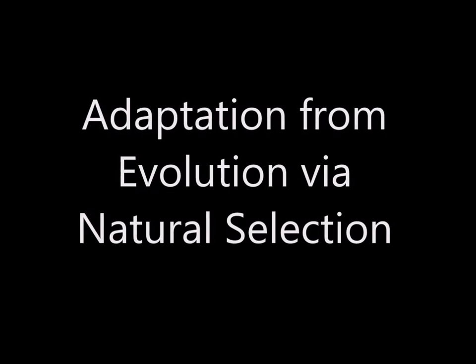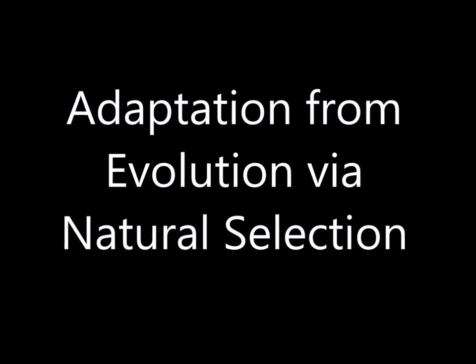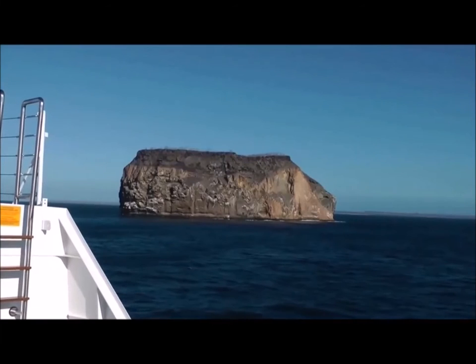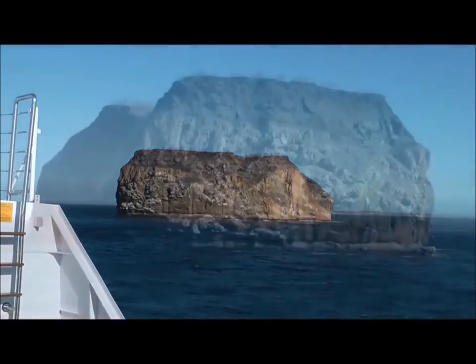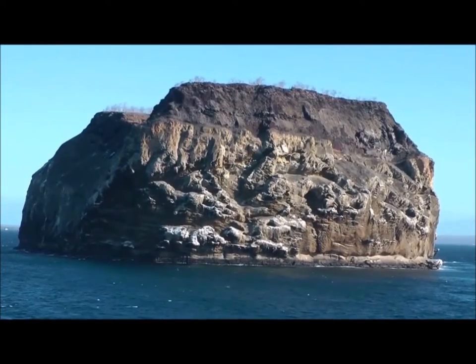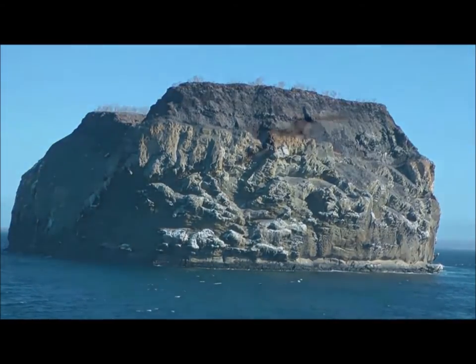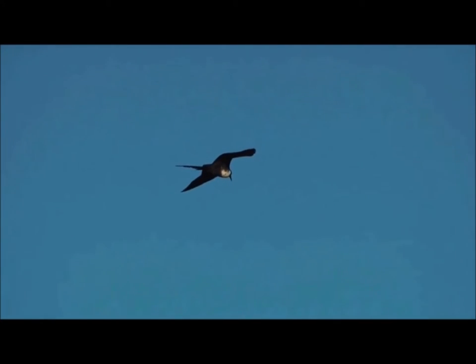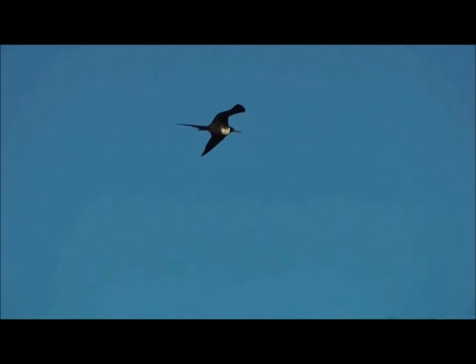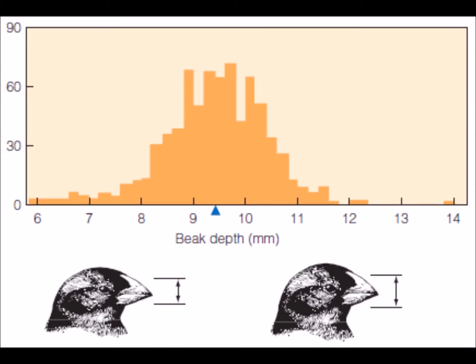To demonstrate how adaptation is a product of evolution via natural selection, we turn to the work of Peter and Rosemary Grant, which provides an excellent documented example. They spent more than three decades in Daphne Major, Galapagos, where they recorded dramatic shifts in the physical characteristics of finches brought about by extreme climate change. The phenotypic trait that selection acts directly upon is called the target of selection — in this case, beak size. The selective agent is the environmental cause of fitness differences among organisms with different phenotypes — here, the change in food resources.